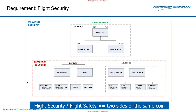Our top-level requirement for this avionics security architecture is flight security. Flight security and flight safety are really two sides of the same coin. This diagram shows that flight safety traditionally consisted of airworthiness — if your system complied with MIL-STD-516 and met all the paragraphs, you were granted airworthiness certification. For our system, we're primarily concerned about determinism, latency, and throughput. Today, that's not enough — you've got to add cybersecurity into the mix.